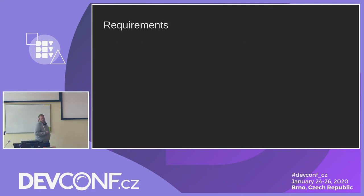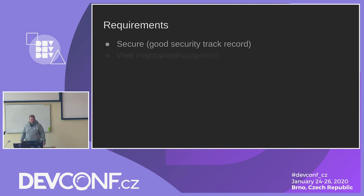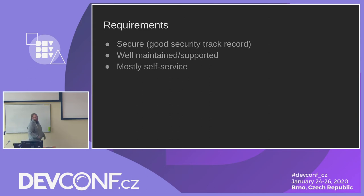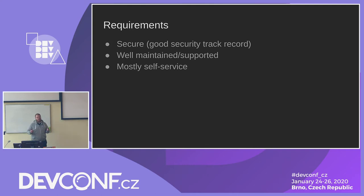Some requirements for a new system: we need something secure with a good proven track record, something used in production by companies and other projects, something well-supported and well-maintained. And we still need that self-service component — we still want users to be able to change their own information, people to sponsor others into groups, and the community to control their data rather than having admins do everything.